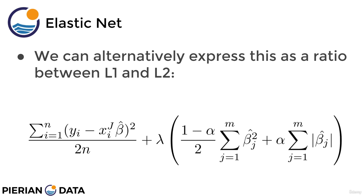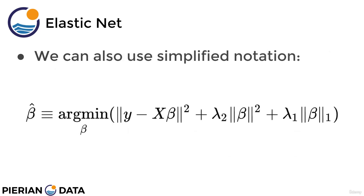Alternatively, instead of expressing this as two lambdas, you can express this as a lambda on the outside and an alpha value on the inside, where the alpha value is just the ratio between lasso versus ridge. There's going to exist some set of alpha and another lambda which corresponds to lambda 1 and lambda 2 of the previous expression. This is more convenient in terms of programming because it allows us to just set alpha as a ratio — if alpha equals 0, we're just considering β², and if alpha equals 1, we're only considering |β|.